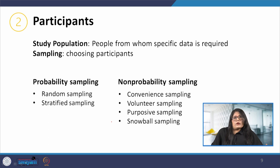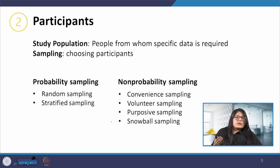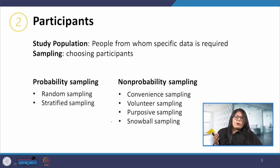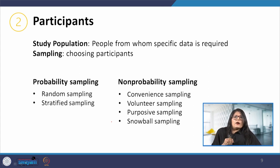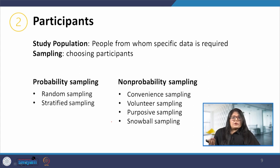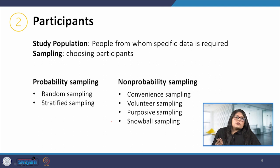The second important issue is the participant. The goals developed for the data gathering session will indicate the types of people from whom data has to be gathered. People who fit this requirement are called the study population, and the process through which we select these participants is called sampling.